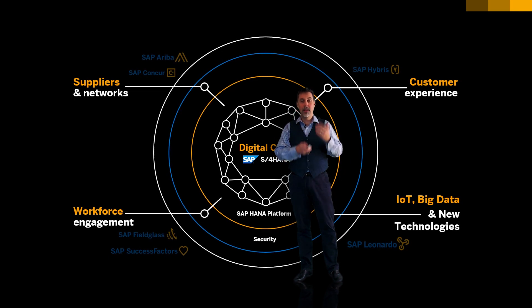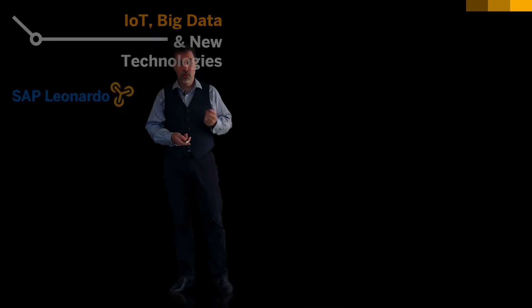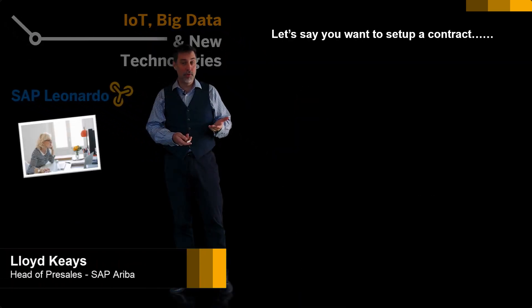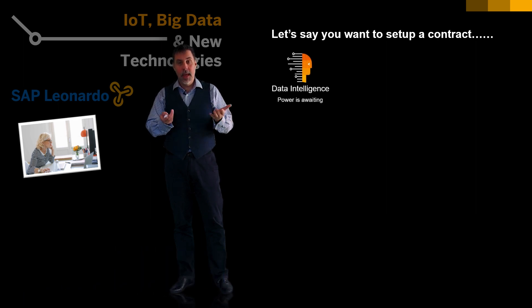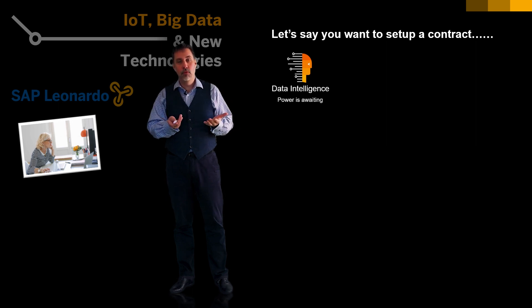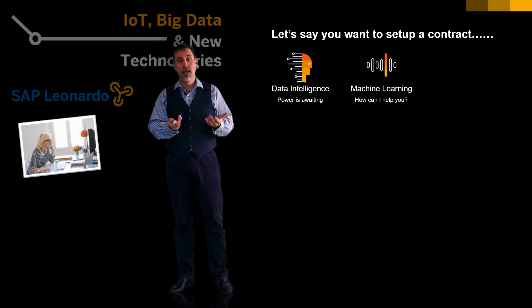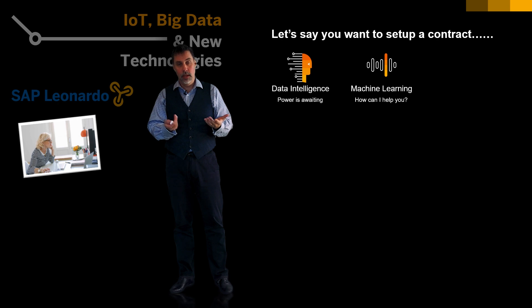Leonardo has six technologies, and to talk about that, let's go through a little story. Sandy is a contract manager and she needs to make a contract. Her computer has a solution in the cloud that has all the capabilities to do things she would not even think were possible, and through those capabilities, machine learning will be applied so that she can interact with the computer in a natural way.